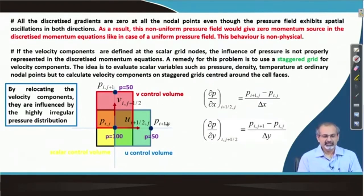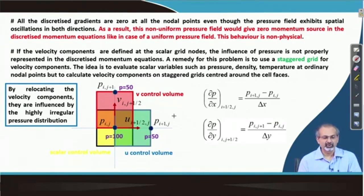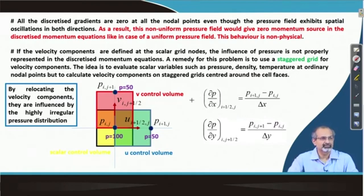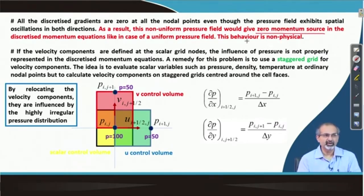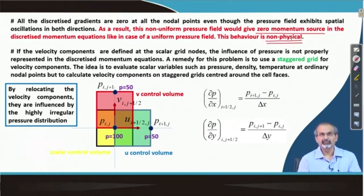All the discretized gradients are zero at the nodal points, even though the pressure field exhibits spatial oscillations in both directions. As a result, this non-uniform pressure would give zero momentum source. The pressure gradient lies on the right-hand side of the momentum equation as a source term, so if you are not able to identify the non-zero pressure gradient, you are adding zero momentum source — meaning it cannot influence the evolution of the velocity components. This behavior is non-physical and we have to do something about it.